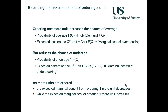What we have to do is balance these two costs. If we order another unit, this increases the chance of overage. The probability of overage is the probability that demand is less than or equal to some value Q. The expected loss is the overage cost times this probability, and is known as the marginal cost of overstocking. Ordering one more unit reduces the chance of underage, of course. The expected benefit on this extra unit is the underage cost times one minus the probability above, and this is known as the marginal benefit of understocking.